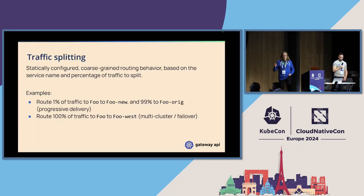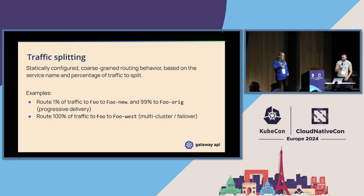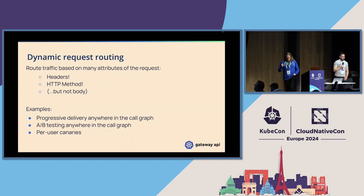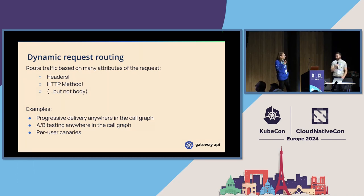Things you can do with Gateway API right now: you can use it to route traffic — if you see something coming in at /gui/ it goes to one workload, /face/ goes to another. You can do traffic splitting for progressive delivery, failover, canary deployments. You can do dynamic routing based on headers or HTTP method. You can do routing for both your gateway controller and your service mesh, giving you progressive delivery anywhere in the call graph, not just at the edge.